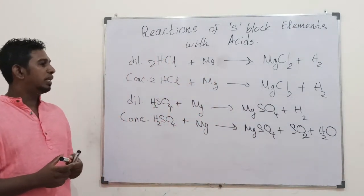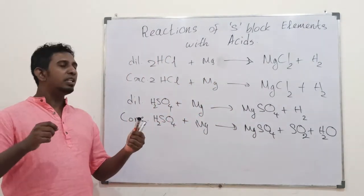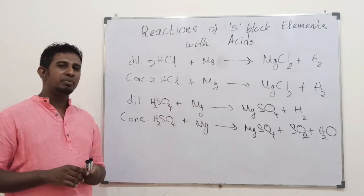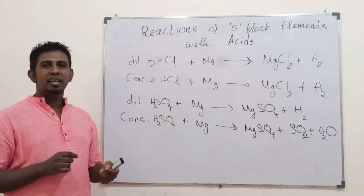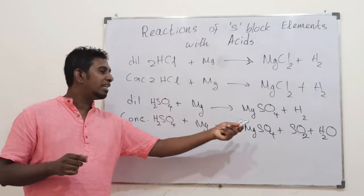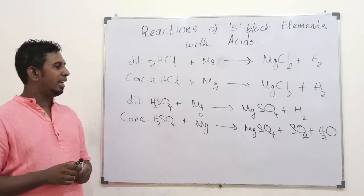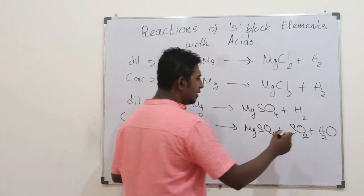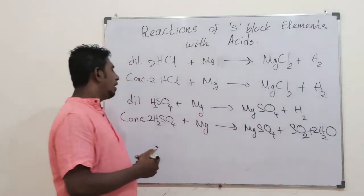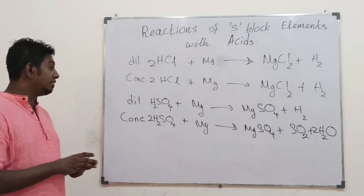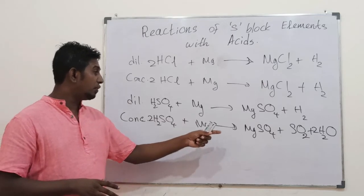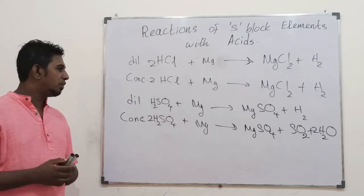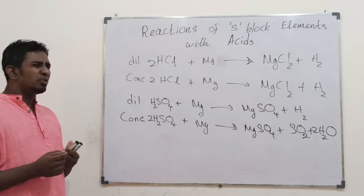Students, it is two different here. With dilute, they liberate H2. With concentrate, they liberate not H2 but SO2. If you balance the reaction, it is 2H2SO4 reacting with magnesium, giving you MgSO4, SO2, and 2H2O.